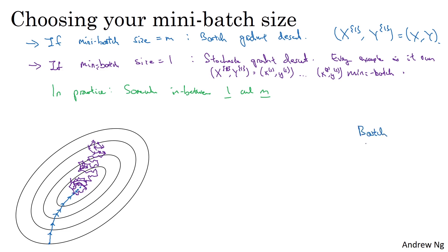If you use batch gradient descent, so mini-batch size equals m, then you're processing a huge training set on every iteration. So the main disadvantage of this is that it takes too much time, too long per iteration, assuming you have a very large training set. If you have a small training set, then batch gradient descent is fine.